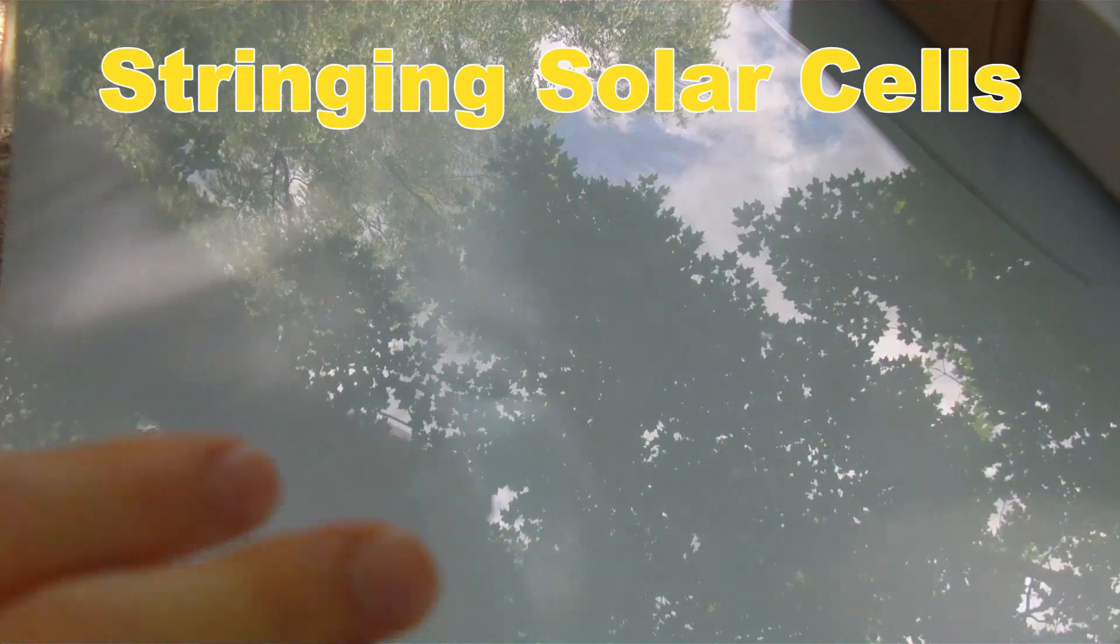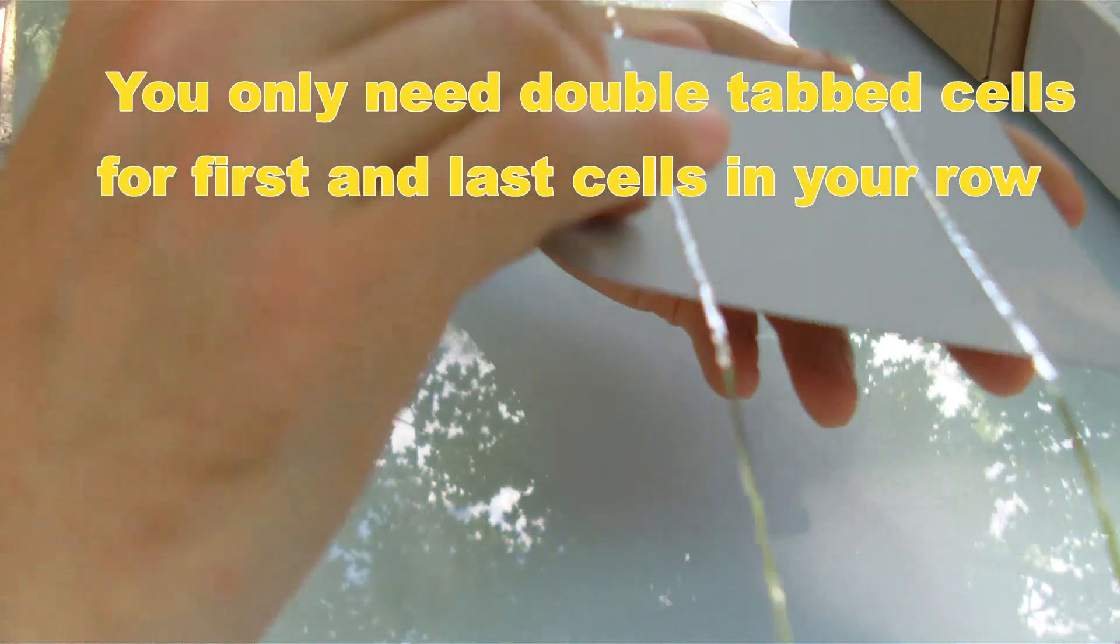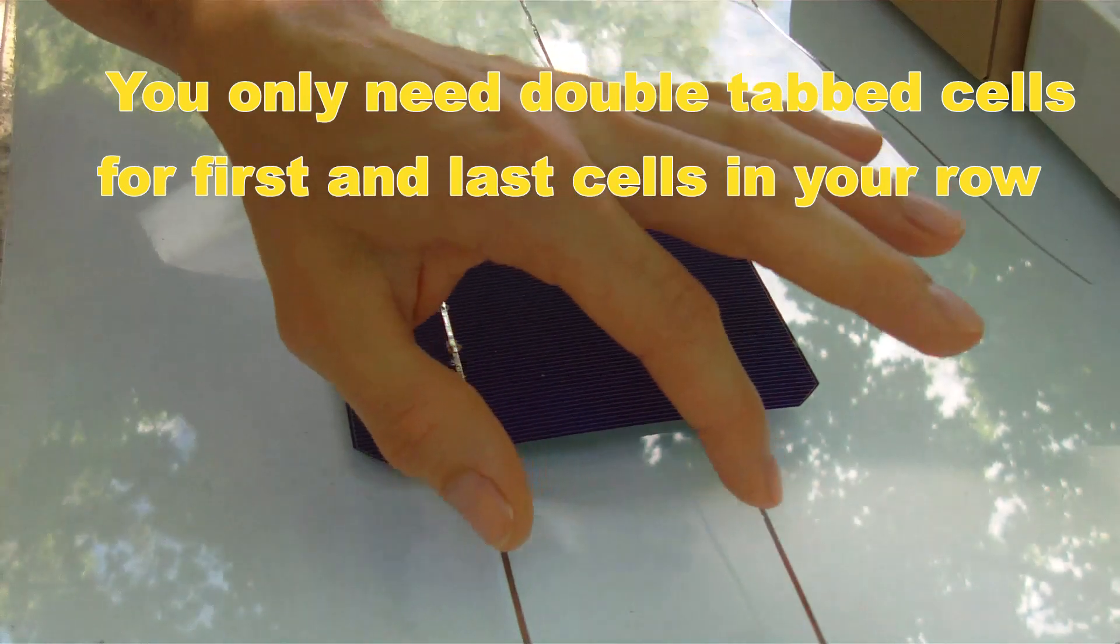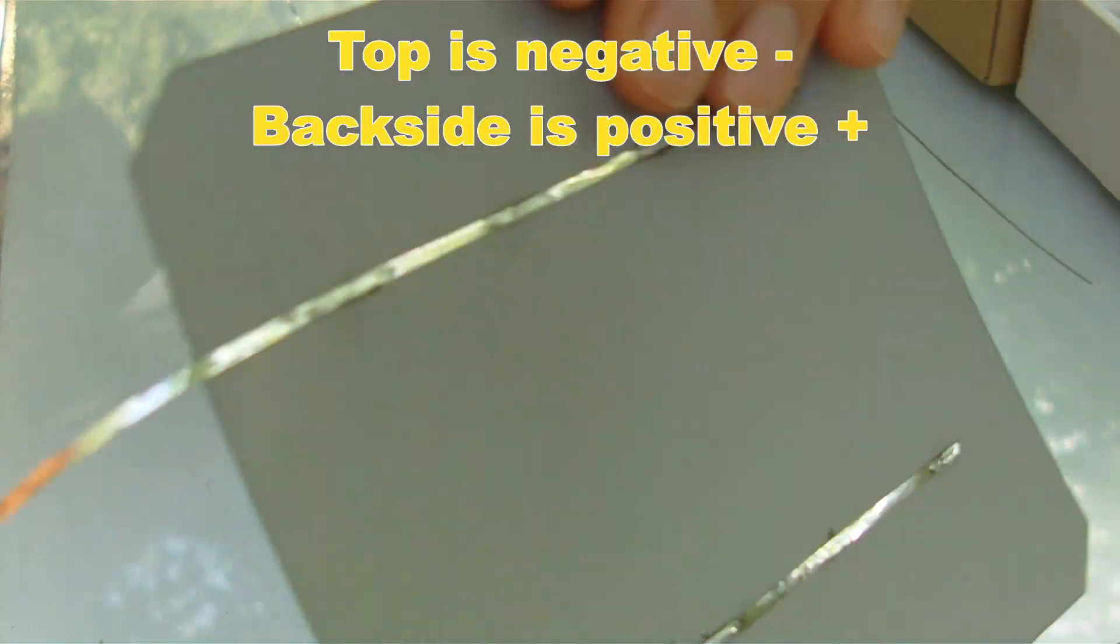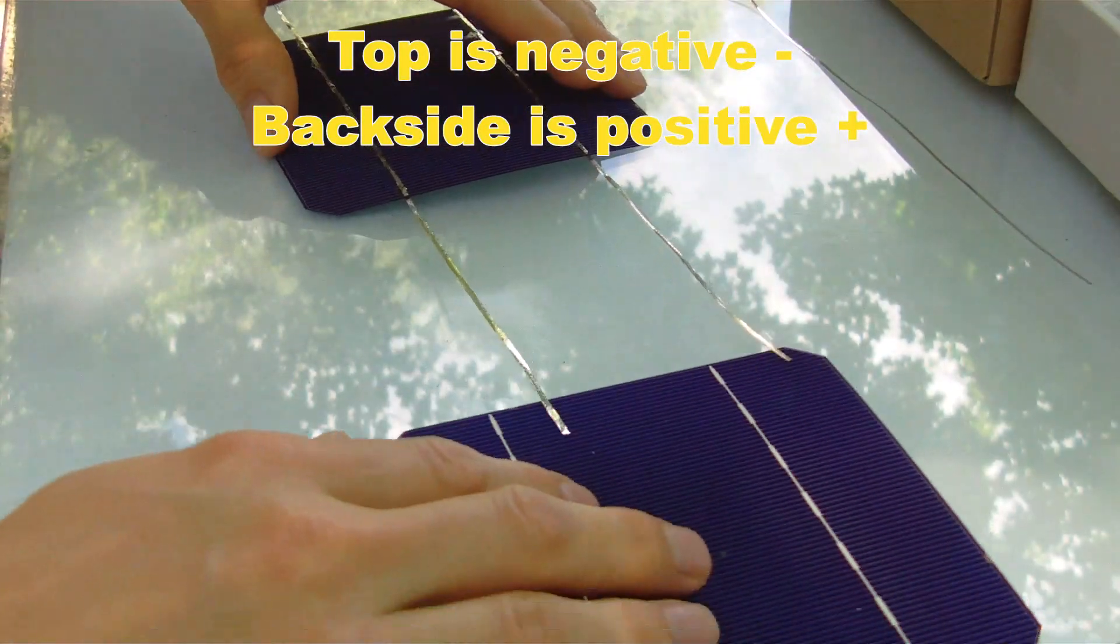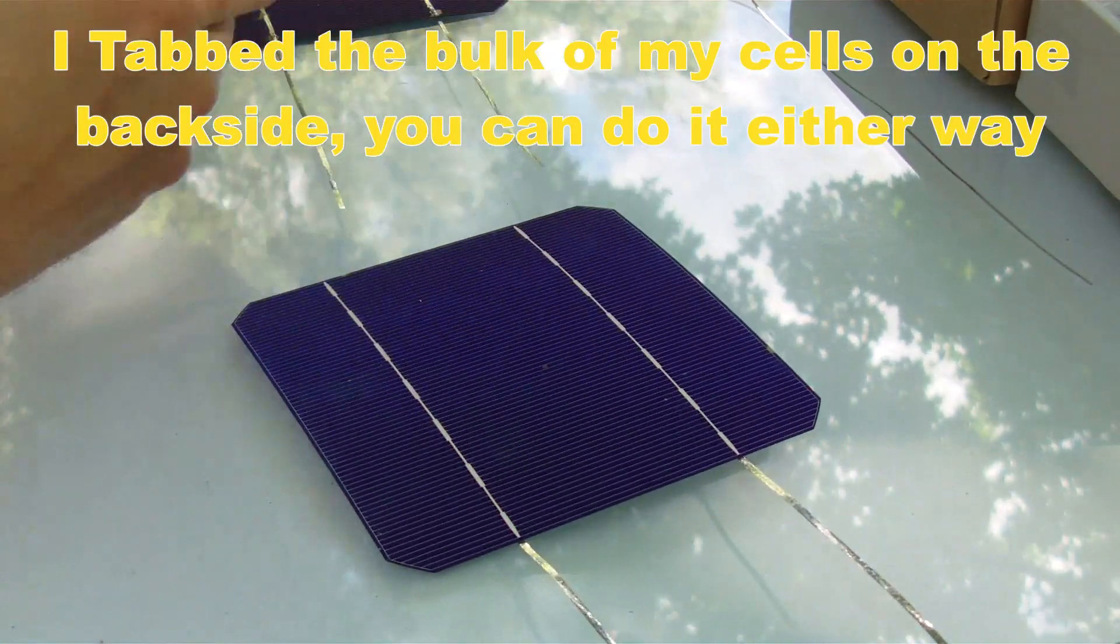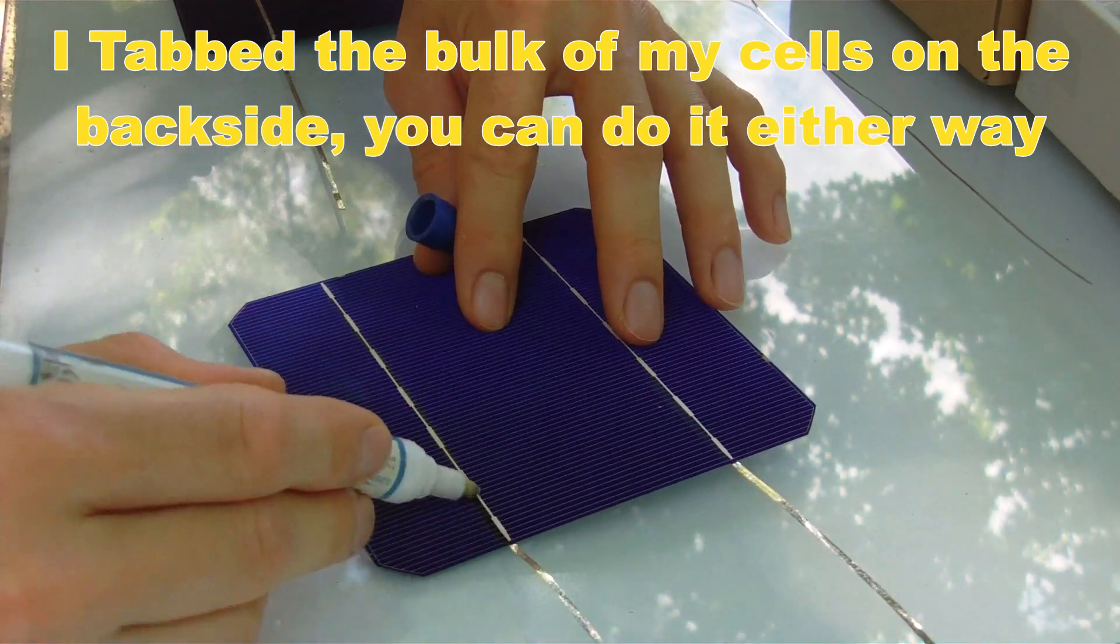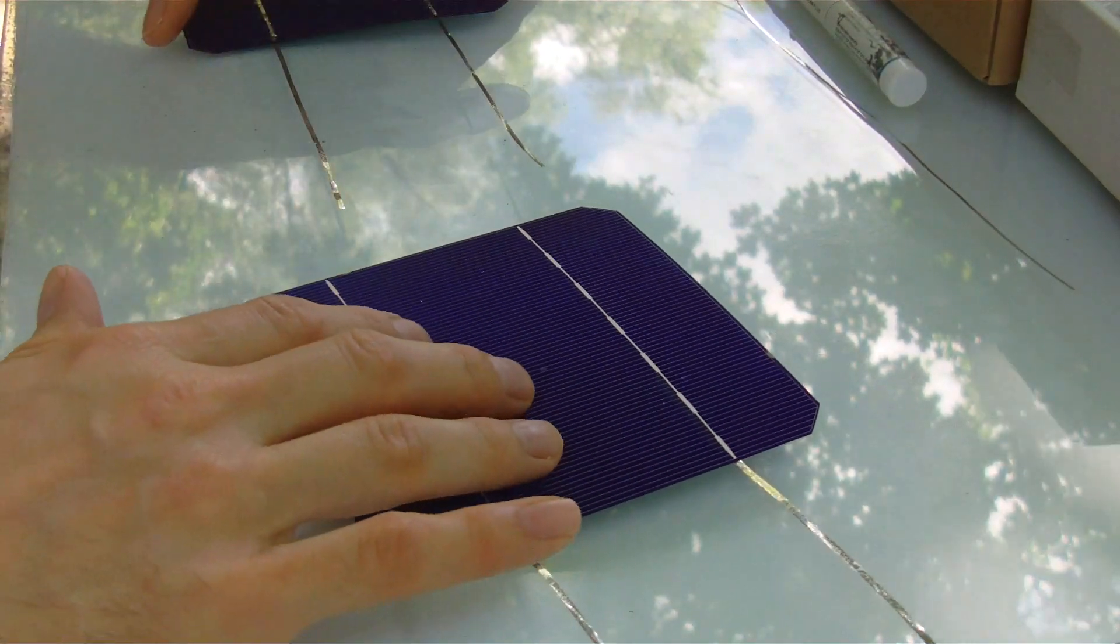So we're going to string a row now. We have a cell here that has double tabbing wire on it. This one has tabbed front and back, so this is our top leads, these are the bottom. So we're going to take one of our cells here that we have tabbed on the bottom, I'm going to slide that under and join it. So what we can do is start stringing now.